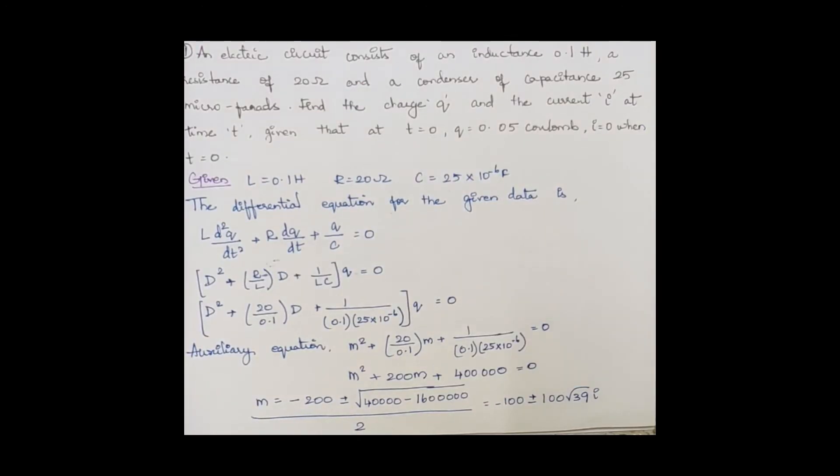Let's try solving an example. An electric circuit consists of an inductor of inductance 0.1 henry, a resistance of 20 ohm, and a condenser of capacitance 25 microfarads. Then the charge q and the current i is what we have to find.